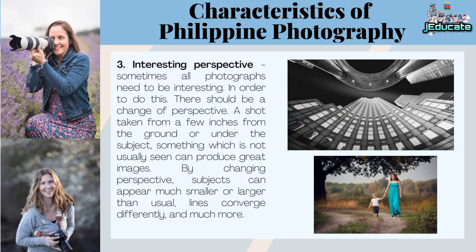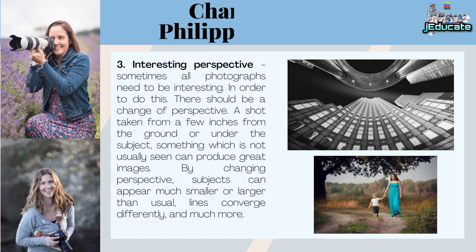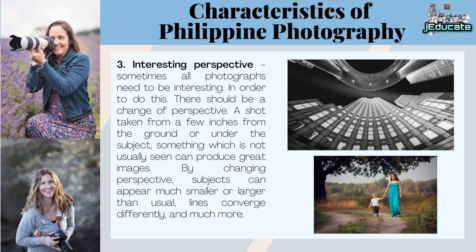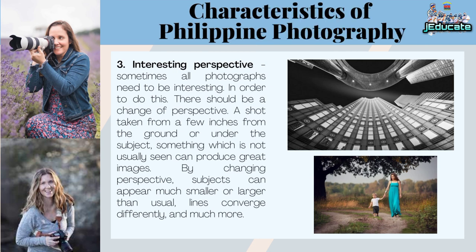Number 3: Interesting Perspective. Sometimes photographs need to be interesting, and in order to do this, there should be a change of perspective. A shot taken from a few inches from the ground, or under the subject — something not usually seen — can produce great images. By changing perspective, subjects can appear much smaller or larger than usual, lines converge differently, and much more.